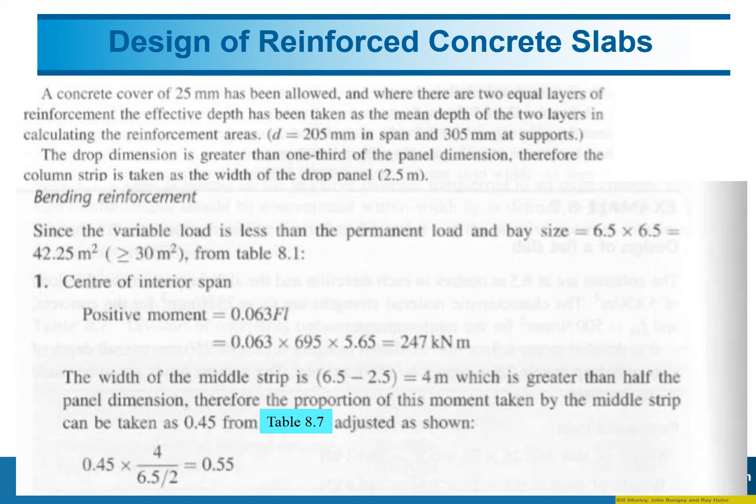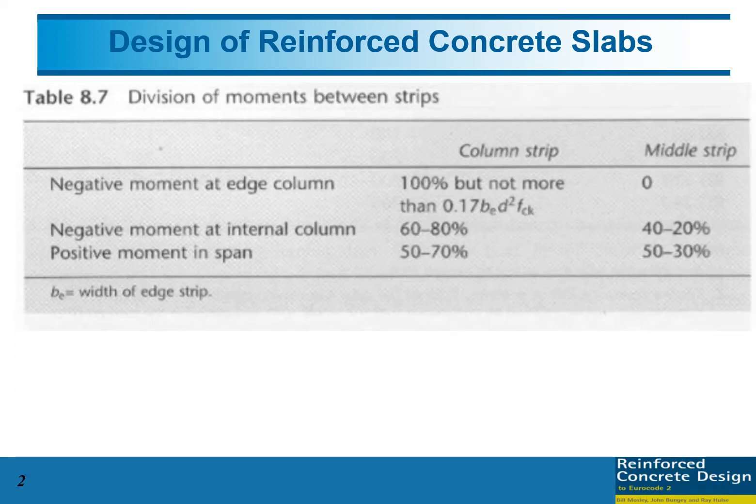This value we can get from Table 8.7. 0.45 means 45 percent, and then we need to adjust the value with the width of the middle strip divided by the span divided by 2, which gives us 0.55. Based on this adjusted value, we now know that the contribution from positive moment to the interior span is 0.55 or 55 percent.